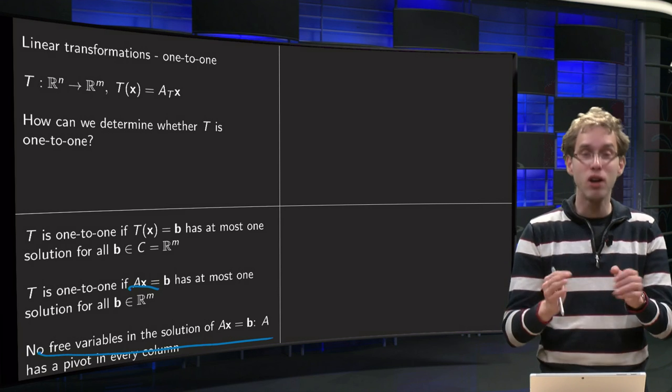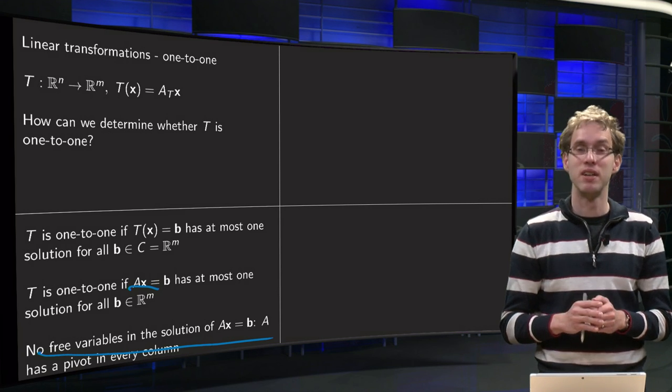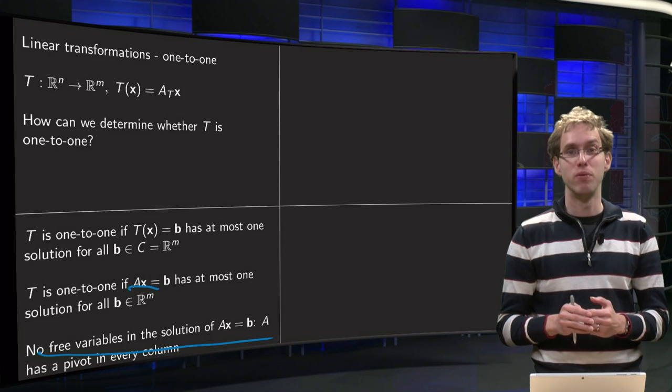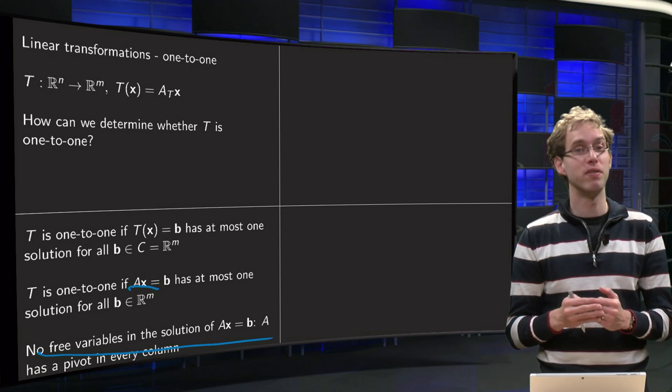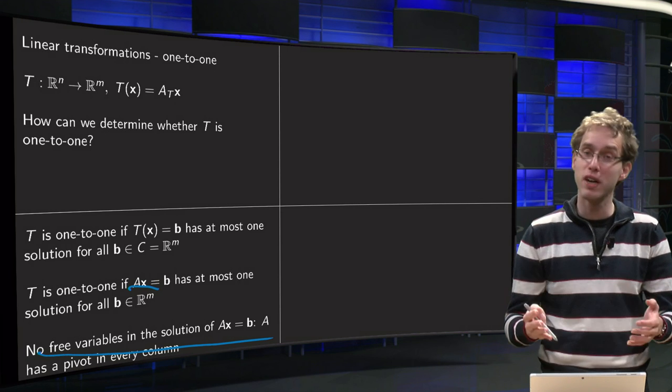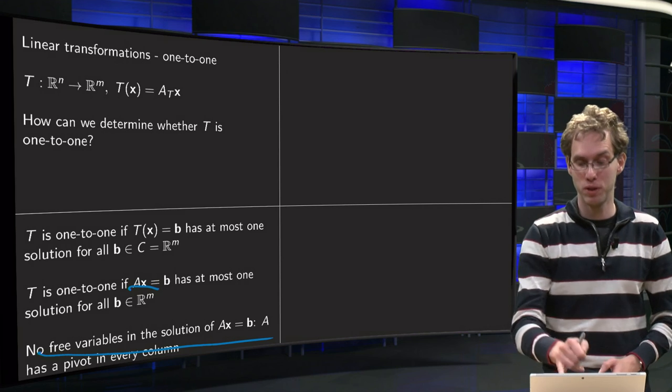Well if every column of your matrix has a pivot then your transformation will be 1 to 1 because you don't have free variables. And if you have columns without pivots then you will have free variables and your transformation will not be 1 to 1.